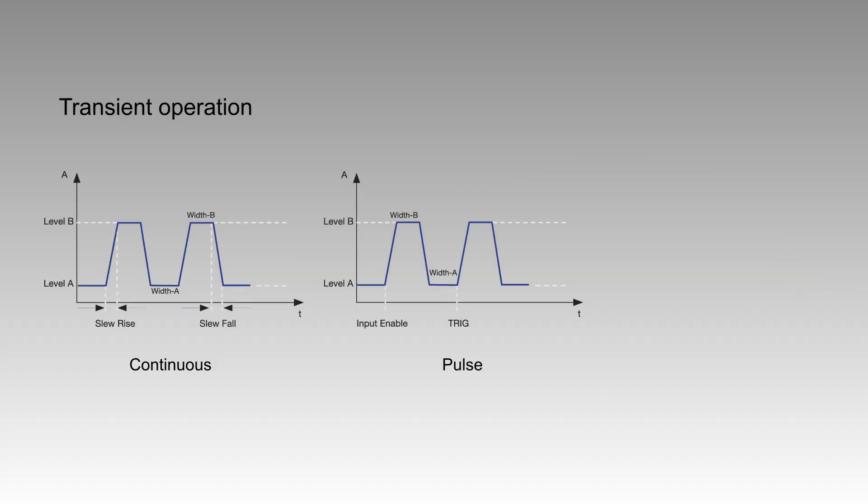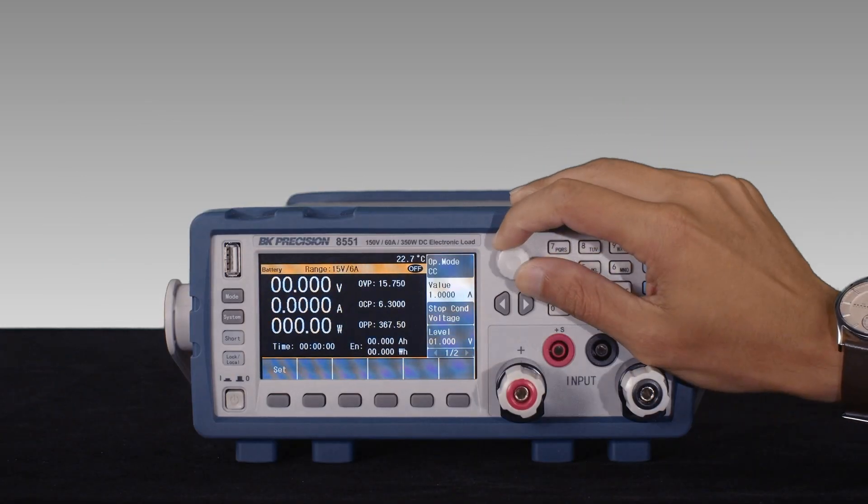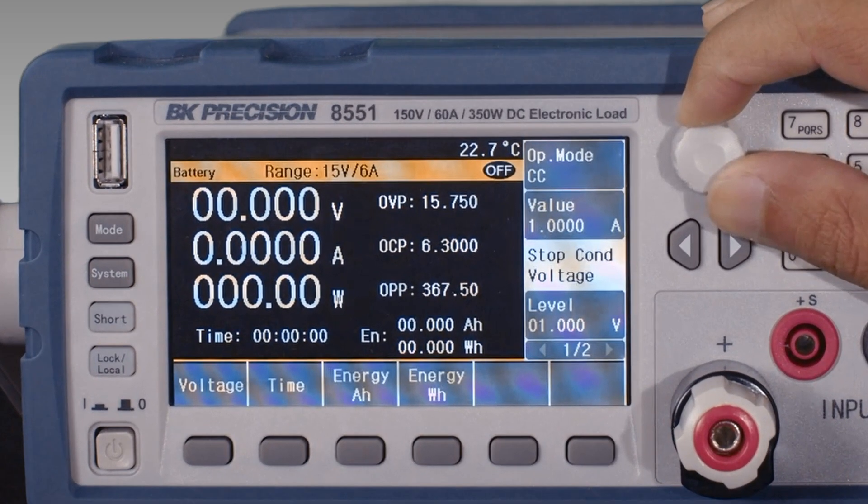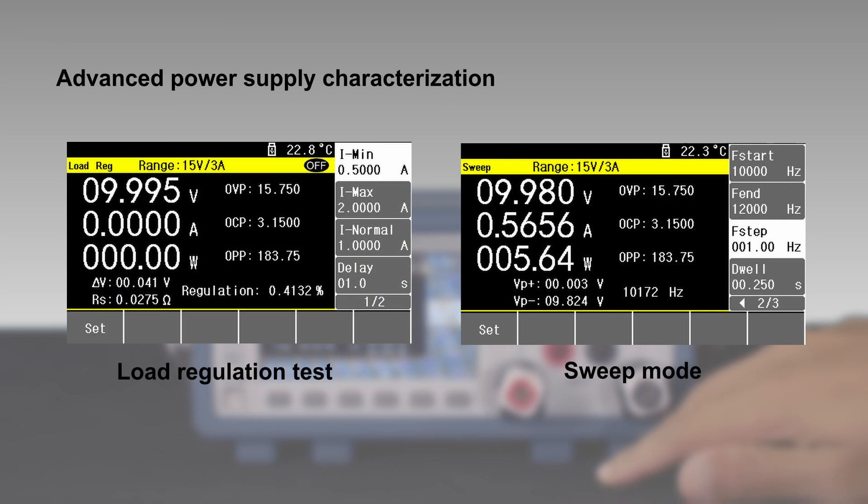Transient operation enables the load to periodically switch between two load levels continuously for one trigger-dependent pulse cycle or toggle. Additionally, this series offers advanced capabilities with a dedicated battery discharge mode to safely discharge batteries and test modes specifically designed to evaluate common DC power supply performance indicators including load regulation and maximum overshoot-undershoot.